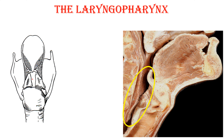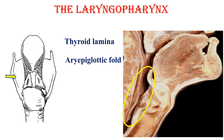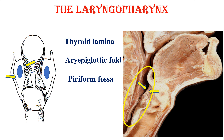The laryngopharynx — we are looking at it from the back. That is the thyroid lamina, the aryepiglottic folds one on each side. The important part of the laryngopharynx is the pyriform fossa, here and here, which is lateral to the aryepiglottic fold and medial to the thyroid lamina — between the thyroid lamina and the aryepiglottic fold. This is again a very silent area where tumors, food, a foreign body, or anything can be impacted. That is the epiglottis here and over here — that is the main part of the laryngopharynx.